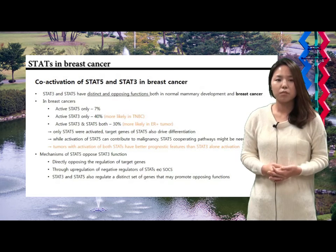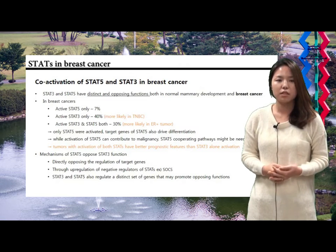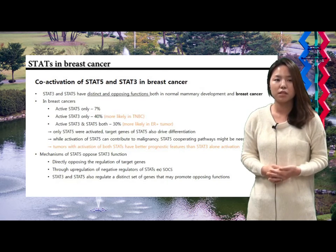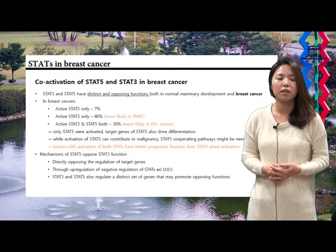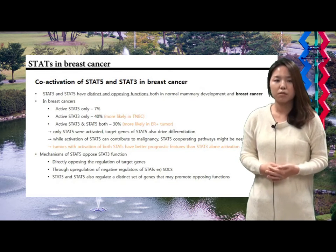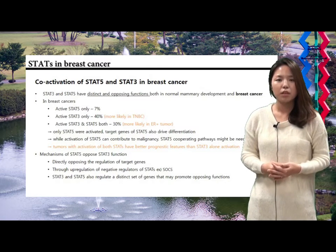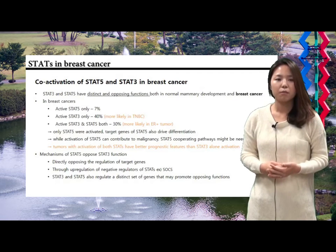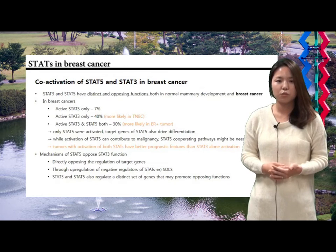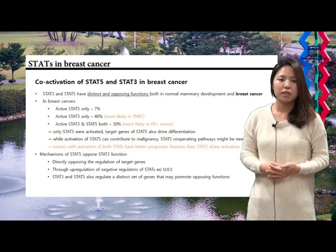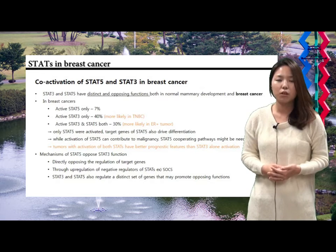STAT 3 and STAT 5 both have positive associations with breast cancers. However, there are several reports that suggest STAT 3 and STAT 5 have distinct and opposing functions in breast cancer when they both exist in the same cells. 7% of breast cancers have only active STAT 5, while 40% have active STAT 3 only. Also, 30% of breast cancers have both active STAT 3 and STAT 5. Tumors with active STAT 3 only have poor prognosis and are more often triple negative breast cancers. Interestingly, tumors with activation of both STATs have better features than STAT 3 alone activation.